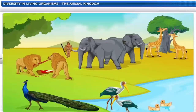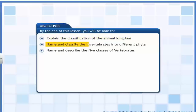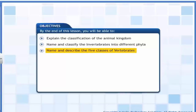Human beings are included in this kingdom. In this lesson, you will learn how the animal kingdom is classified. By the end of this lesson, you will be able to explain the classification of the animal kingdom, name and classify the invertebrates into different phyla, and name and describe the five classes of vertebrates.